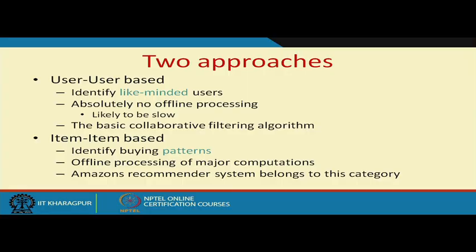Welcome back. We continue our discussion with recommender systems, and in this particular class we are going to talk about collaborative filtering based recommendation systems. This collaborative filtering based recommender system can be broadly classified into two categories: user-user based and item-item based. There are other collaborative filtering techniques as well, but we are limiting ourselves to only these two to understand the concept.